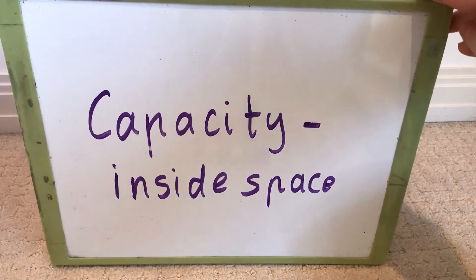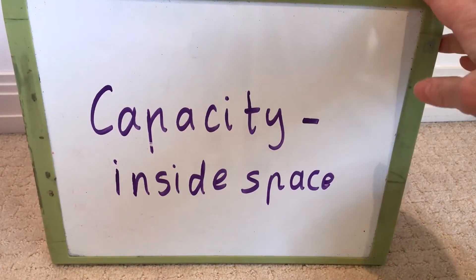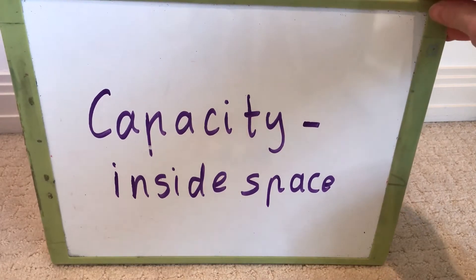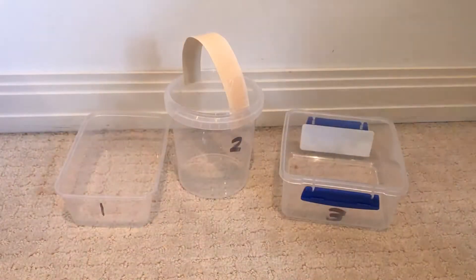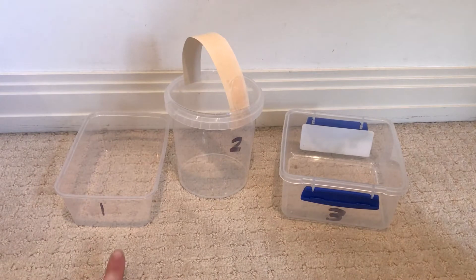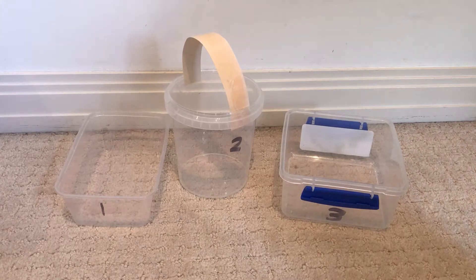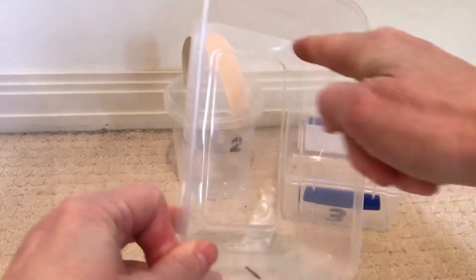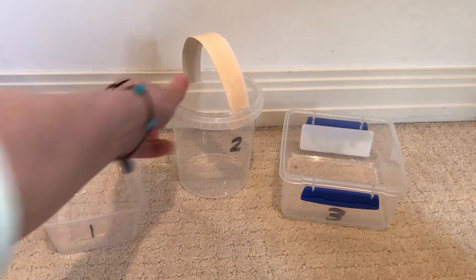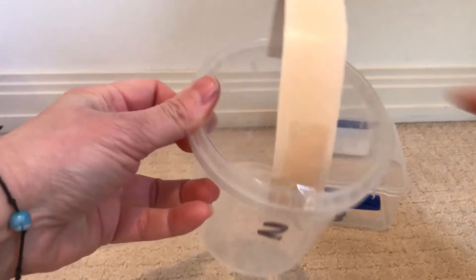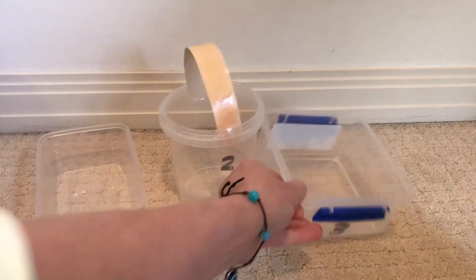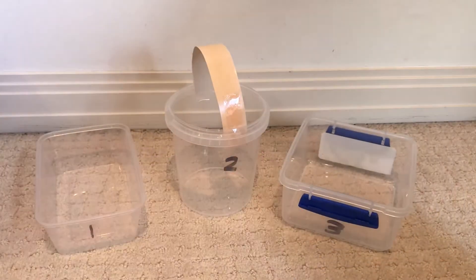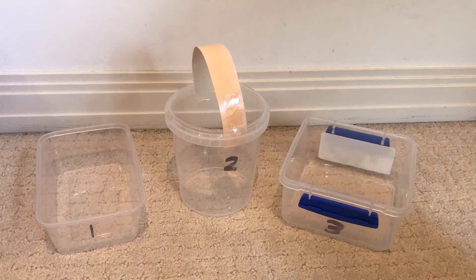Good morning children. Today we're looking at capacity, which is the inside space, and I have three lovely containers here: container 1, container 2, and container 3. Now I want to know which one has the biggest inside space. Is it container 1? Is it container 2? Or is it container 3? Can you guess? Maybe write that number down on a piece of paper.